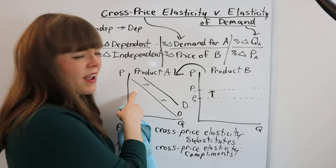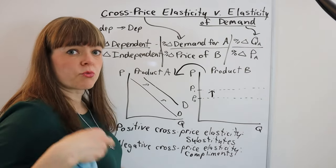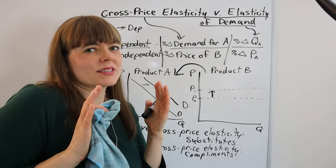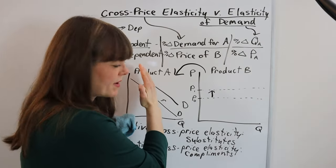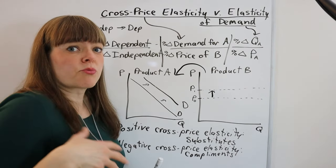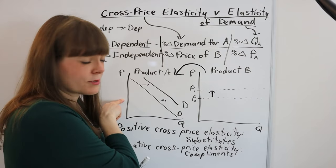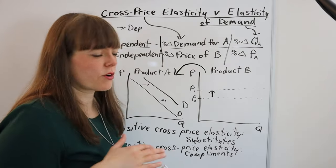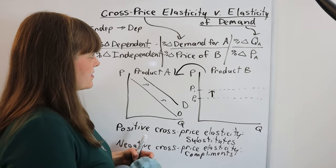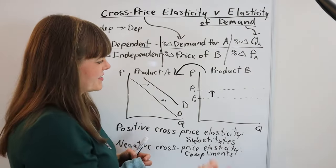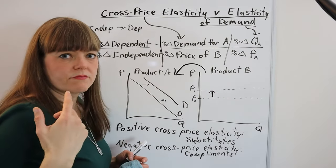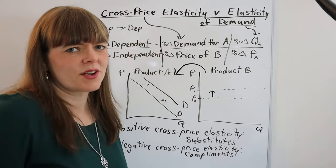Elasticity of demand captures how steep the demand curve is. If demand is really inelastic, even when the price goes up a hundred percent, people buy only a little fewer — that's a really steep demand curve, representing an unresponsive quantity to price. Whereas if people are very responsive to price — say a 10% price increase leads to 50% fewer purchases — that's a flat demand curve. So elasticity of demand is the shape of the curve, while cross-price elasticity has to do with how responsive the whole demand curve is to another product that's either a substitute, a complement, or perhaps neither.